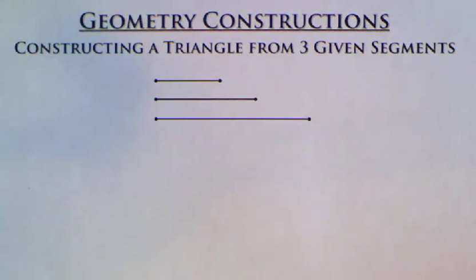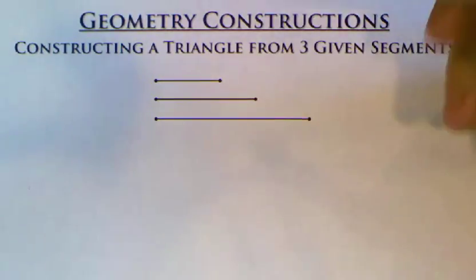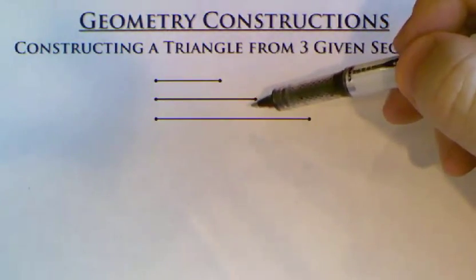For this construction, we're going to take three lengths that have been given to us and make a triangle out of them. For this, we can actually start with any one of those three sides.